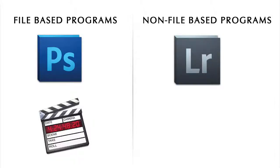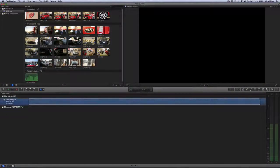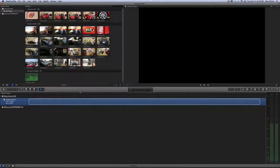Adobe Lightroom, on the other hand, is a non-file-based program. You open up Adobe Lightroom and you have access to all of your photo libraries — very similar to the way iTunes works. Final Cut Pro 10 works the same way. Every time you open it up, you have access to all of your events and all of your projects. There's no longer a single project file that unifies everything.